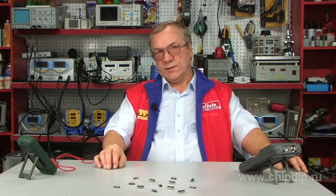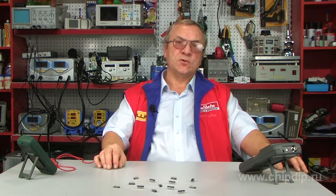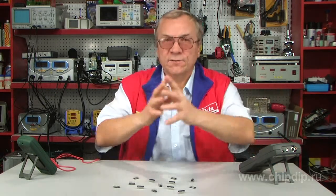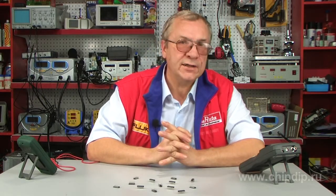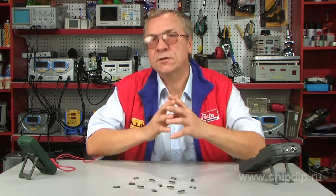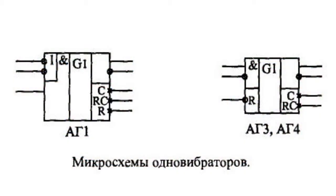Single vibrators, or monostable multivibrators, occupy an intermediate position between combinational microcircuits and microcircuits with internal memory. Their output signals cannot be determined precisely by the input signals, as happens in combinational microcircuits, yet they cannot store data for a long time. Single vibrators are microcircuits which, in response to an incoming signal — a logical level or front — form an output signal of a set duration. The duration of the impulse is determined by external time-setting resistors and condensers. Single vibrators are marked as G1 on circuit diagrams.